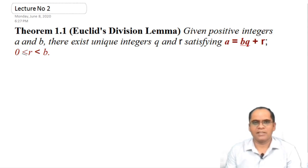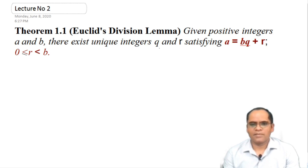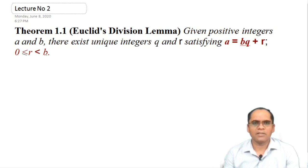Good evening, students. In this lecture, we are going to learn about Euclid's Division Lemma. This lemma says: given positive integers a and b, there exist unique integers q and r satisfying a = bq + r, where r is greater than or equal to 0 and less than b.